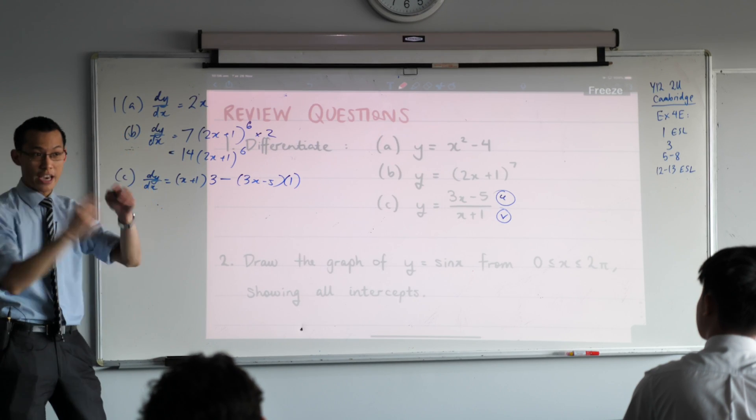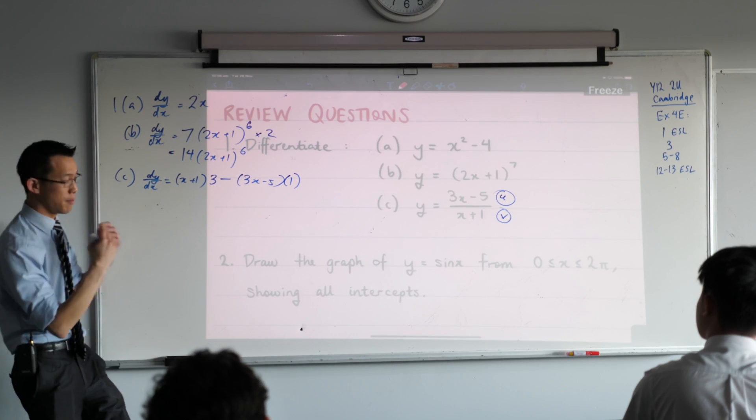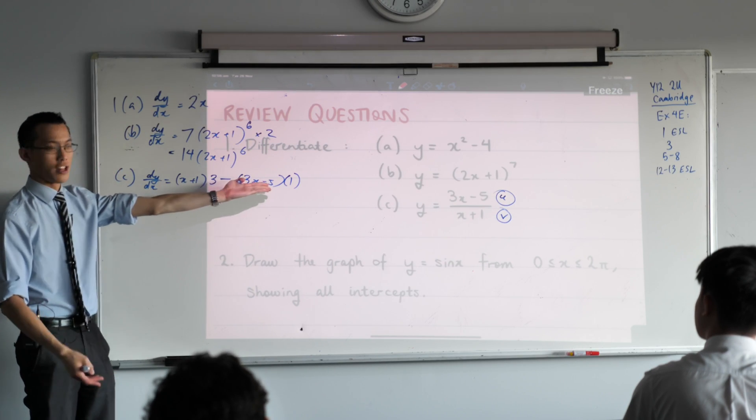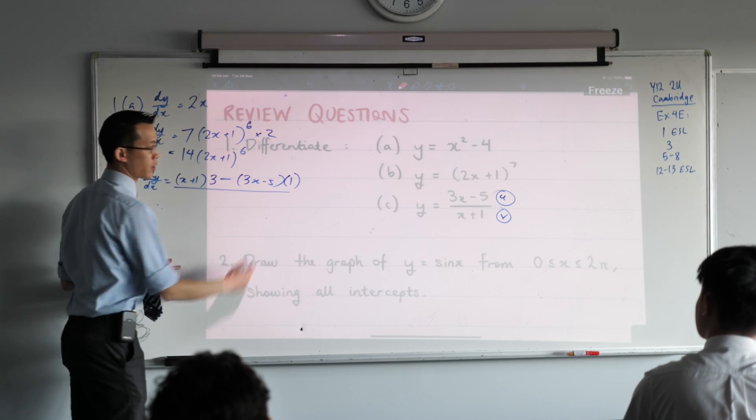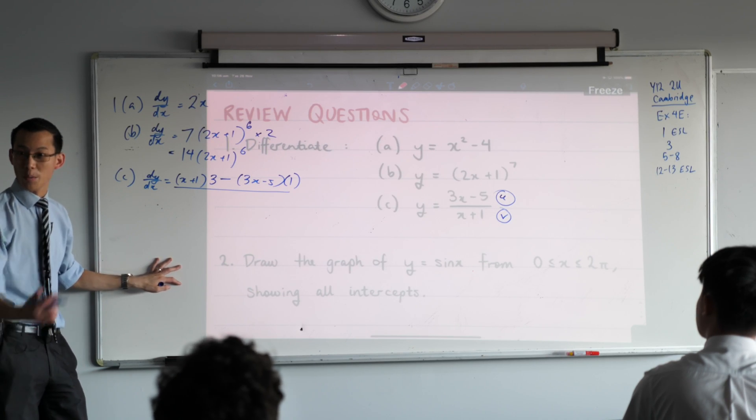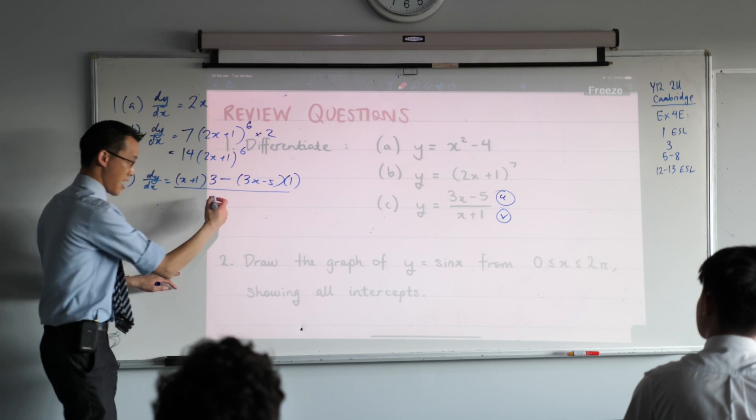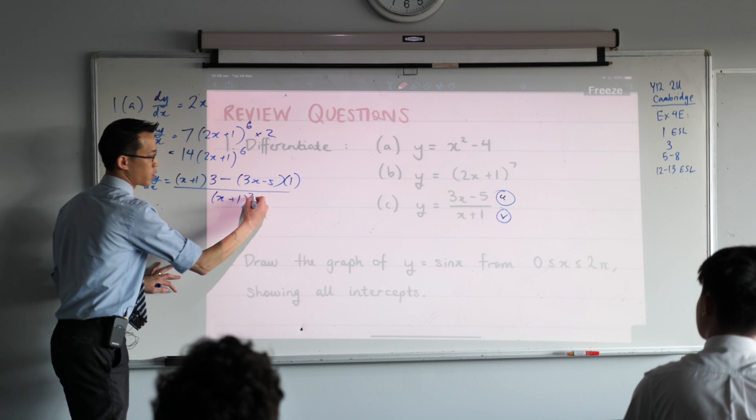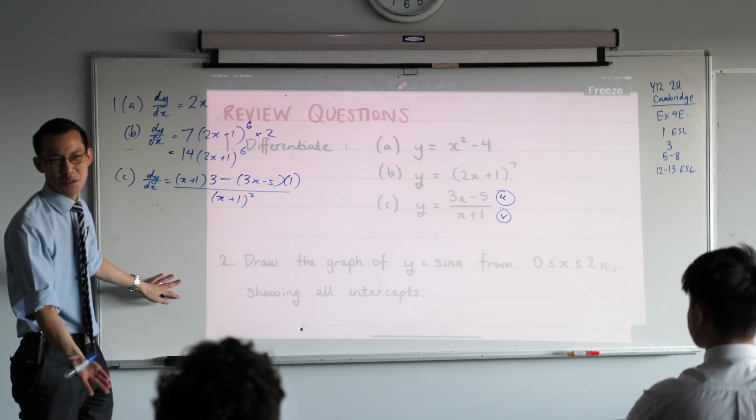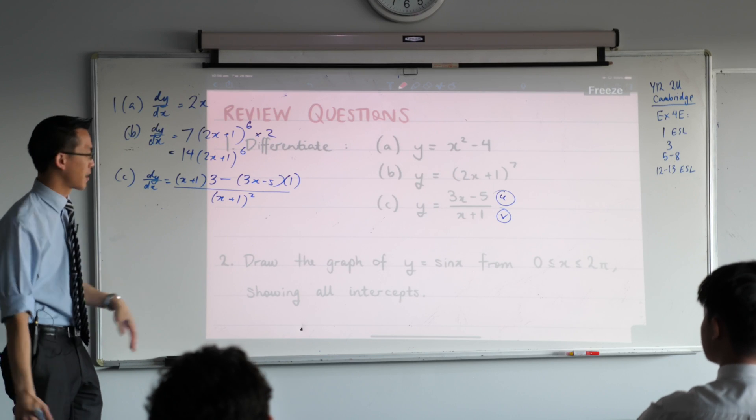For me, number one, it's a mental check that I've got the whole rule there. Number two, it communicates to the person reading my working that I knew where this came from. What's on the denominator? V squared, which in this case is x plus 1 all squared. I know you can expand it as x² + 2x + 1. Do you think it matters? Not usually.